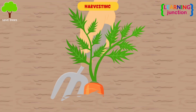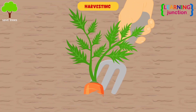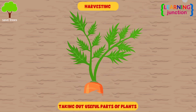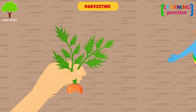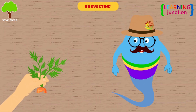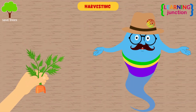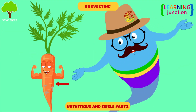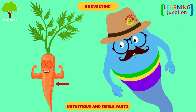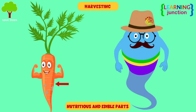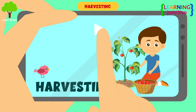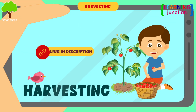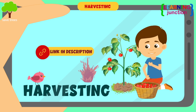Step 6: Harvesting. Harvesting is the process of taking out useful parts of plants. This is done when plants have reached a certain stage where they have nutritious and edible parts. To learn all about harvesting, watch our video on the topic.